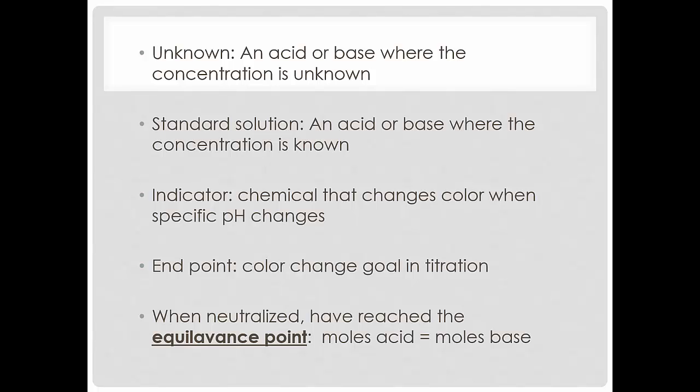The problem is how do we know when we've reached that point? That's where we're going to use colors and it's called an indicator. An indicator is something that's going to change colors when the pH changes. If we're titrating an acid, it's going to be a low pH. With the base, you're going to slowly raise the pH and then it's called an endpoint.